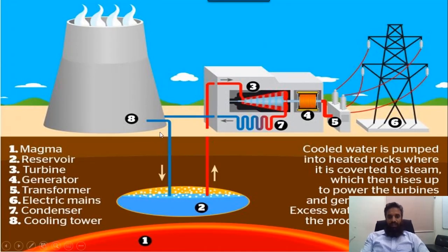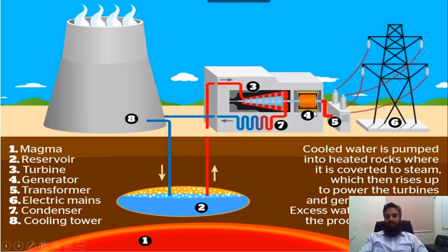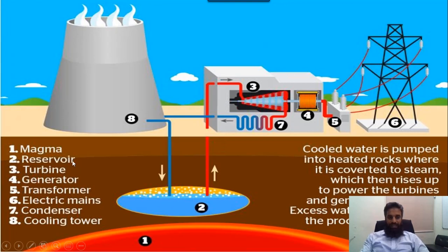This is the complete geothermal plant. There is an injection well and a production well; from the production well we get steam, which rotates the turbine, which drives the prime mover to produce electricity that is fed to the grid. The numbered components are: (1) magma, (2) reservoir, (3) turbine, (4) generator, (5) transformer, (6) electrical main, (7) condenser, and (8) cooling tower.